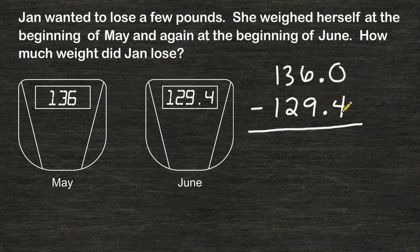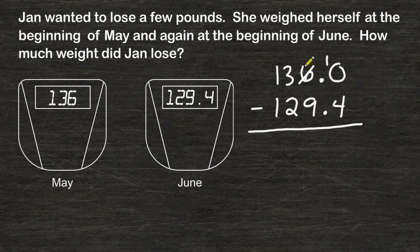Now we have to subtract 4 away from 0, but you cannot take 4 away from 0. So we have to turn that 0 into a 10 and borrow from the 6, which will become a 5. But now we cannot take 9 away from 5, so we turn the 5 into 15 and borrow one whole from the 3, which becomes a 2.